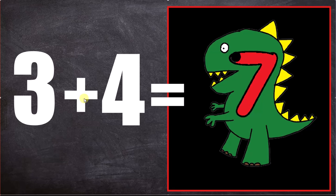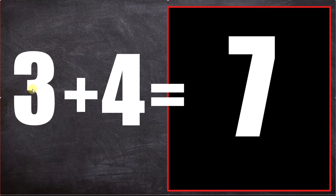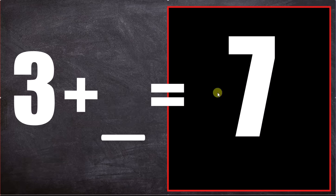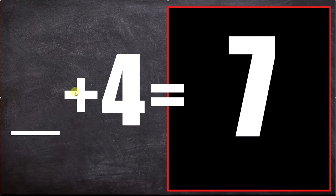3 plus 4 equals 7. 3 plus what equals 7? 3 plus 4 equals 7. What plus 4 equals 7? 3 plus 4 equals 7.